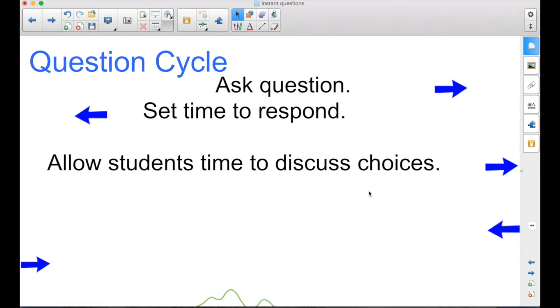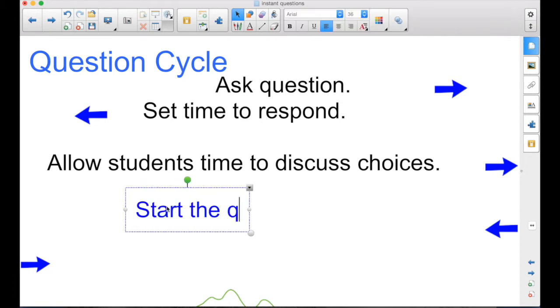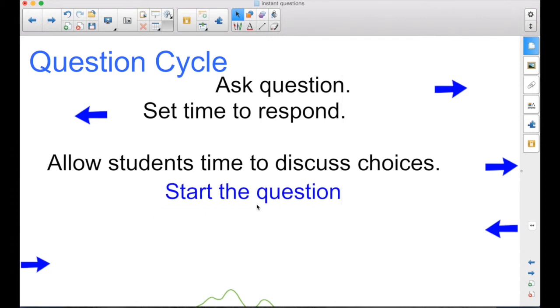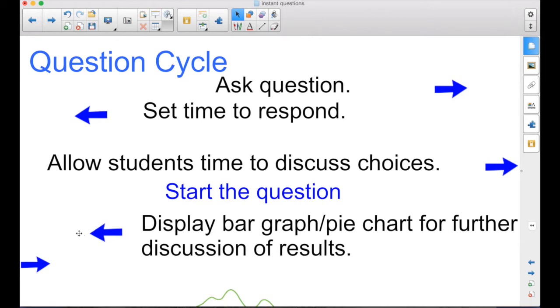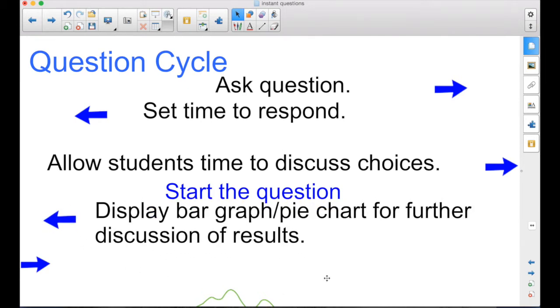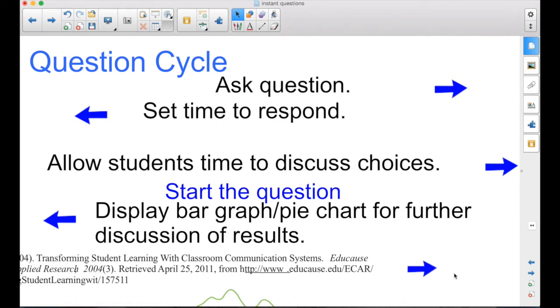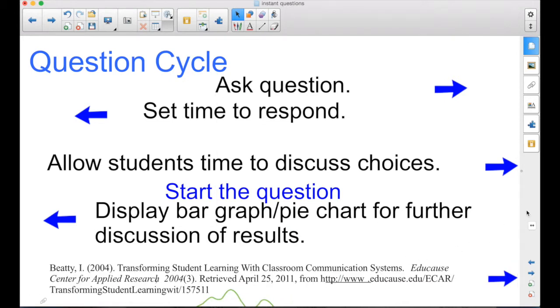But here is the key right here. Allow students time to discuss the choices. Let the students talk. When they talk about it, even if it's just a yes-no question, do you agree, disagree, true or false, talking about it raises the level of thinking. Now, whether this is a question that you've pre-prepared in a notebook file or an instant question, this is when you start the question, after the students discuss. Because once it's started, they can go ahead and answer. So if you start it right away, they're not going to discuss. Once that's done, bring out that bar graph or the pie chart and use that to discuss the results. Have students come up and defend their answers.